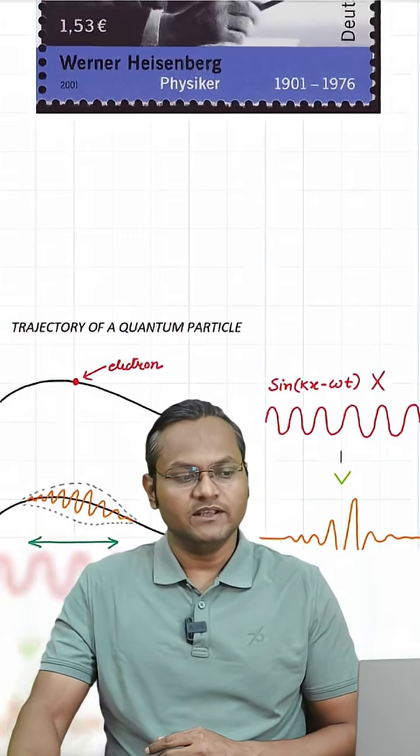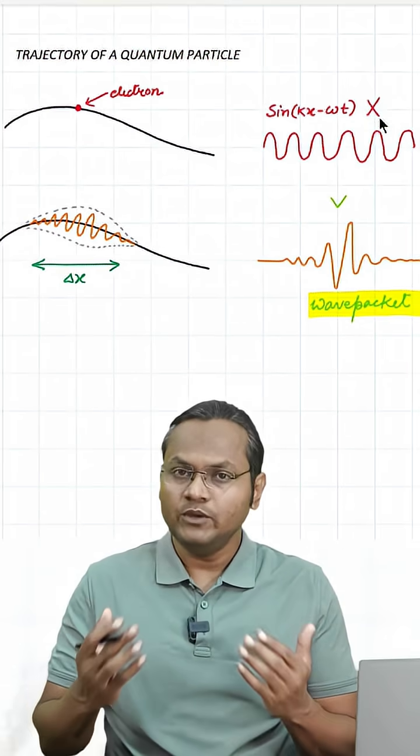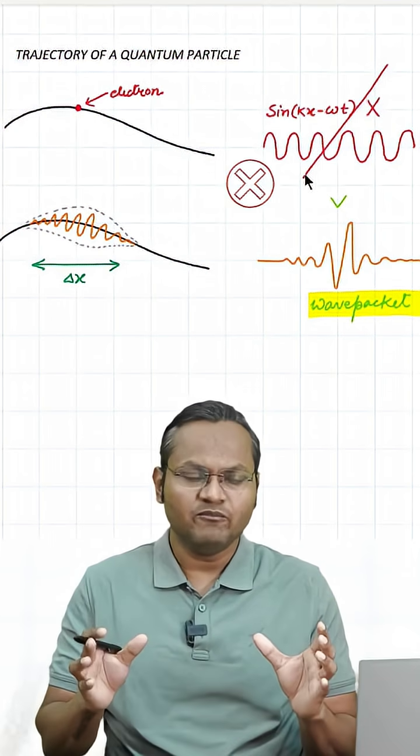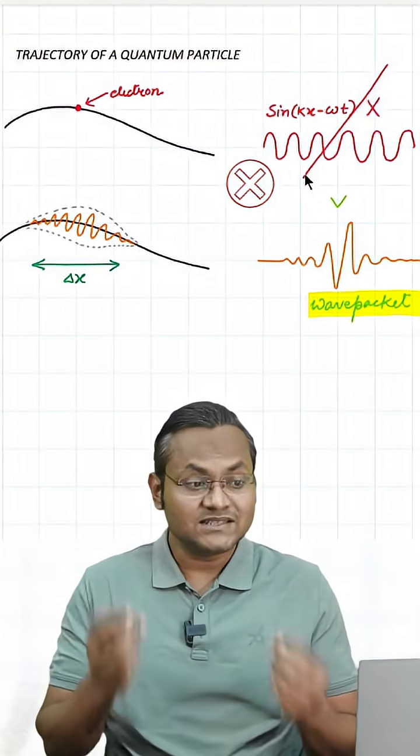A particle like an electron is best described by the motion of a wave packet. But the wave that we use to describe an electron is not a sinusoidal wave, क्योंकि sinusoidal wave में amplitude constant रहती है, जिससे particle के position के बारे में कुछ पता नहीं चलता.